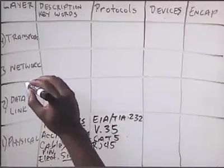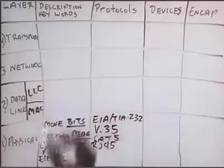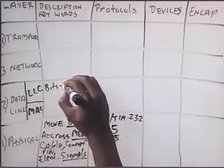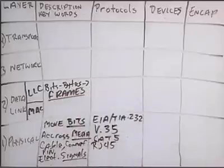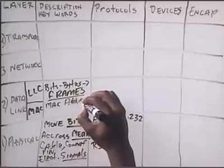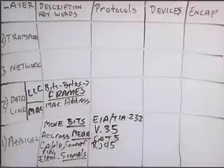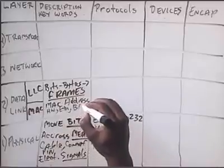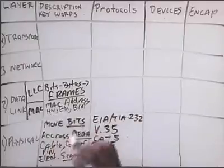The data link layer is subdivided into two sub-layers: the MAC sub-layer and the LLC — the logical link control sub-layer. The data link layer is concerned with combining bits into bytes and bytes into frames. Key words: frames, MAC address. The MAC address is a 48-bit address that is burned into the NIC card on a device when that NIC card is manufactured. Another name for this might be hardware address, ethernet address, or BIA — burned-in address. Different places in the Cisco IOS might refer to the MAC address in these different ways.